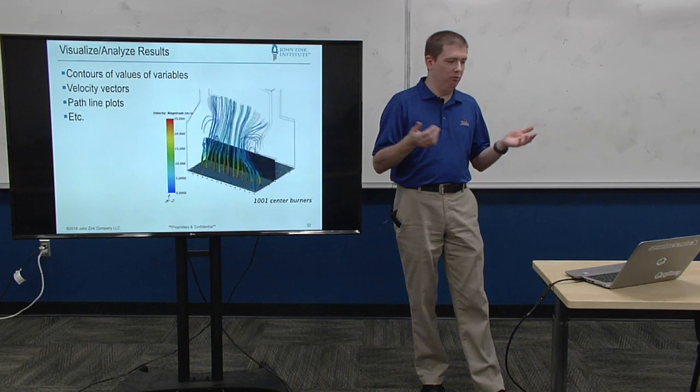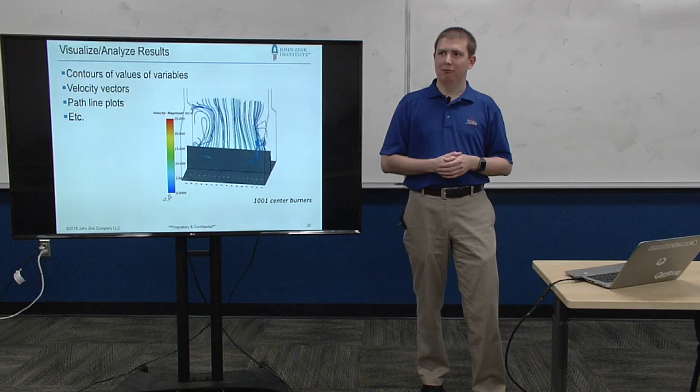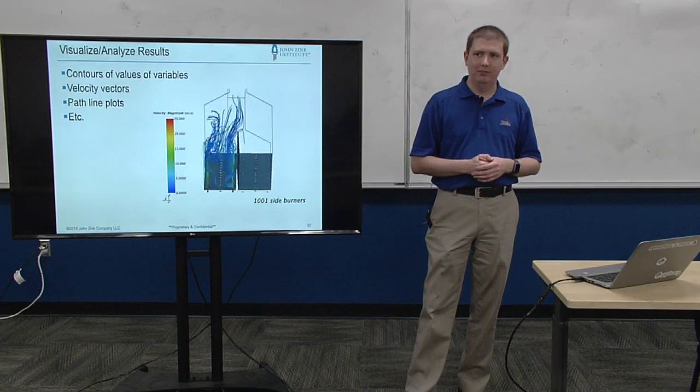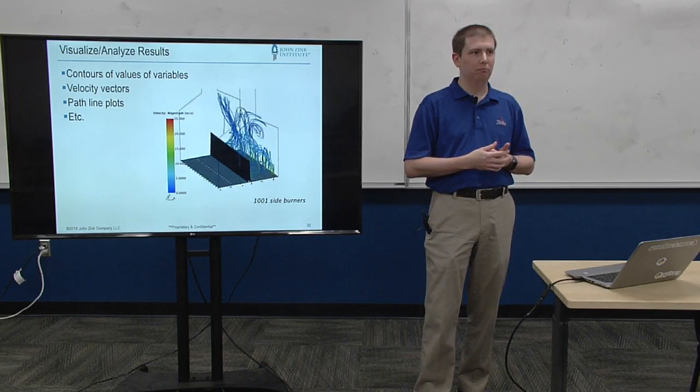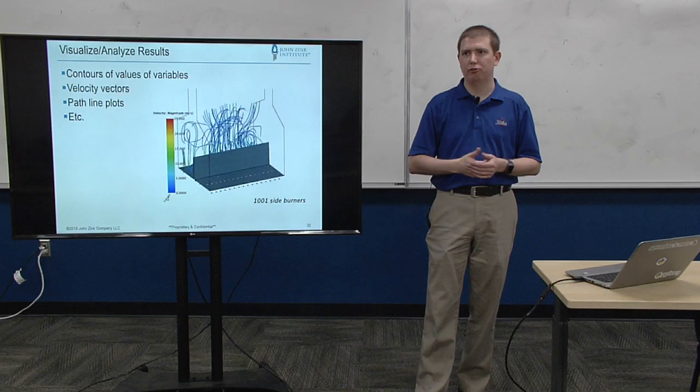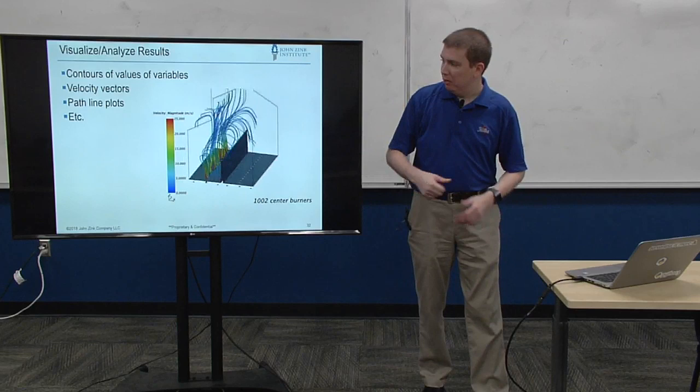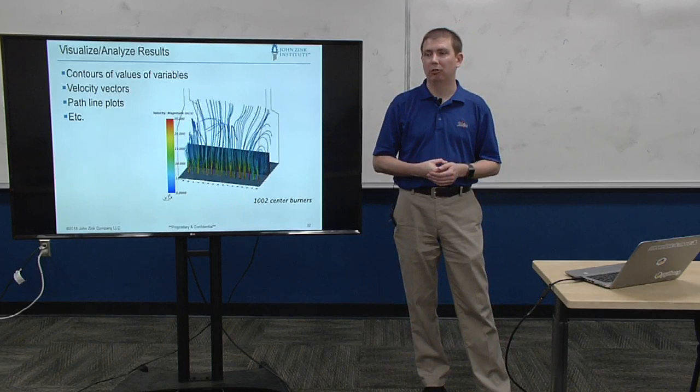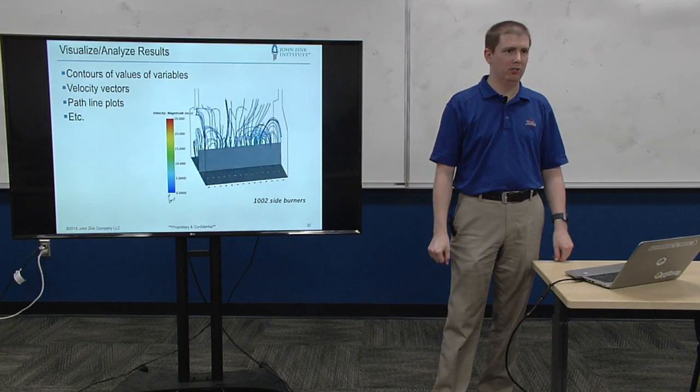And then lastly, you visualize or analyze your results. And this is kind of the fun part, I guess, where you get to make the pretty pictures. Colorful fuzzy diagrams, colorful flow diagrams, colors for directors. There's lots of fun other acronyms. Basically, some of the things you're going to be looking at are contours of different variables. So you say I want to draw a plane and color that plane by O2 concentration. Velocity vectors, looking for flow vectors. Path line plots, like we have here, showing where is the flow going? Or how is the fluid flowing in the enclosure? And there's a bunch of other different types of results that you can pull out, like some of those isosurfaces that we showed earlier.